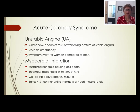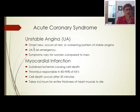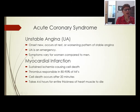Now we turn to acute coronary syndrome. The first subcategory is unstable angina. We had chronic stable angina — short, intermittent, and controlled. Unstable angina is new onset and can occur at rest instead of just with exercise, or it's a worsening pattern of stable angina. For example, a patient was stable but now is getting chest pain at rest. It is an emergency.